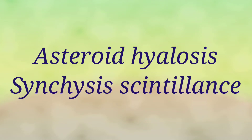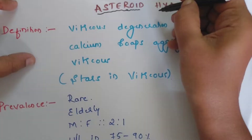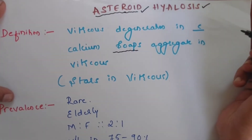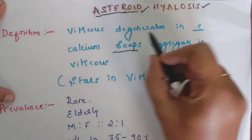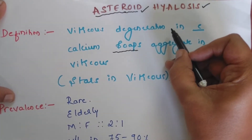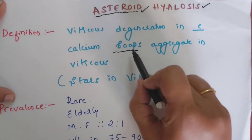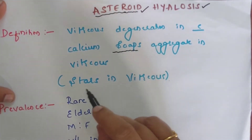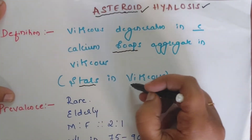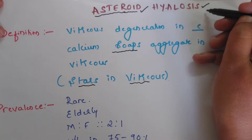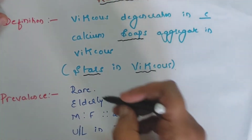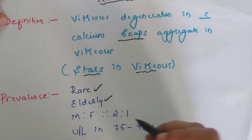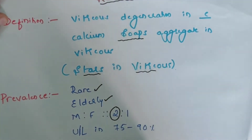The first topic is Asteroid Hyalosis. The word 'asteroid' means something which resembles a star. It is a type of vitreous degeneration in which calcium soaps or calcium lipids aggregate in the vitreous, giving the appearance of stars in the vitreous — hence the name Asteroid Hyalosis.